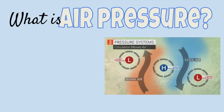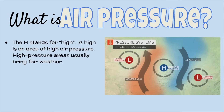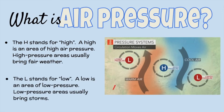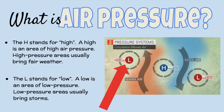What is air pressure? The H stands for high. A high is an area of high air pressure, and high pressure areas usually bring fair weather. The L stands for low. A low is an area of low pressure, and low pressure areas usually bring storms.